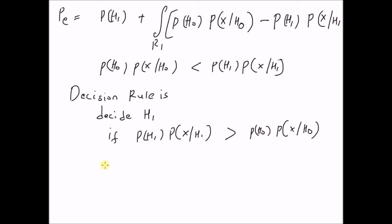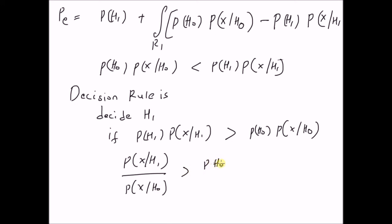The detector becomes: the likelihood ratio P(X|H1) over P(X|H0) should be greater than the ratio of prior probabilities P(H0) over P(H1). This ratio acts as the threshold, and we decide in favor of H1 when the likelihood ratio exceeds the ratio of prior probabilities. This test will always minimize the probability of error. Thanks for watching.